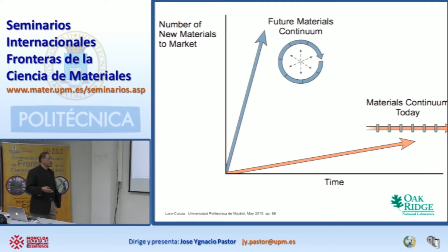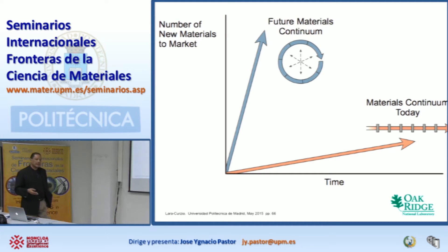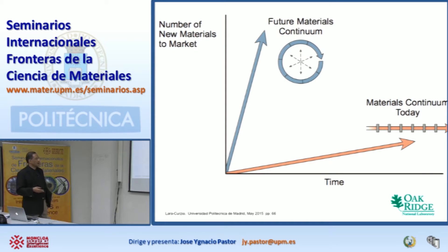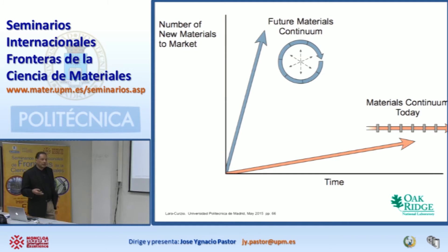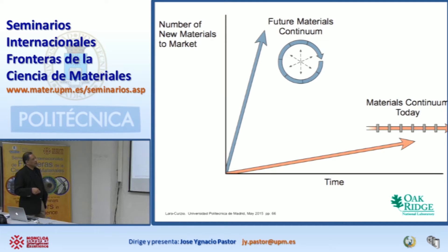Superconductivity — they discovered the high temperature superconductors in the 1980s. To this day, we still have not commercialized them. There are some demonstration projects, and it's probably going to take another 10 years before they get commercialized. The gas turbine alloys used in transportation took like 30 years to develop. It really takes a long time to develop materials.